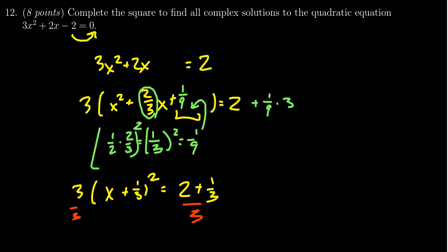Also, since I have to add 1 third with 2, I should probably write the 2 as a 6 thirds, like so. So notice on the right-hand side, you get 6 thirds plus 1 third. That's going to give you 7 thirds. We then divide it by 3, which is the same thing as times it by 1 third. So that gives us a 7 ninths right there.